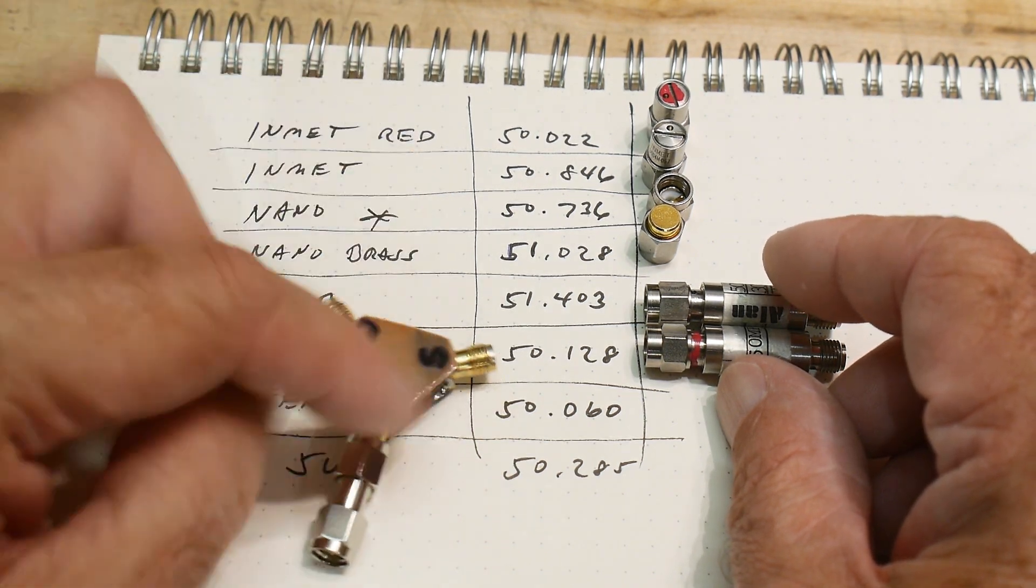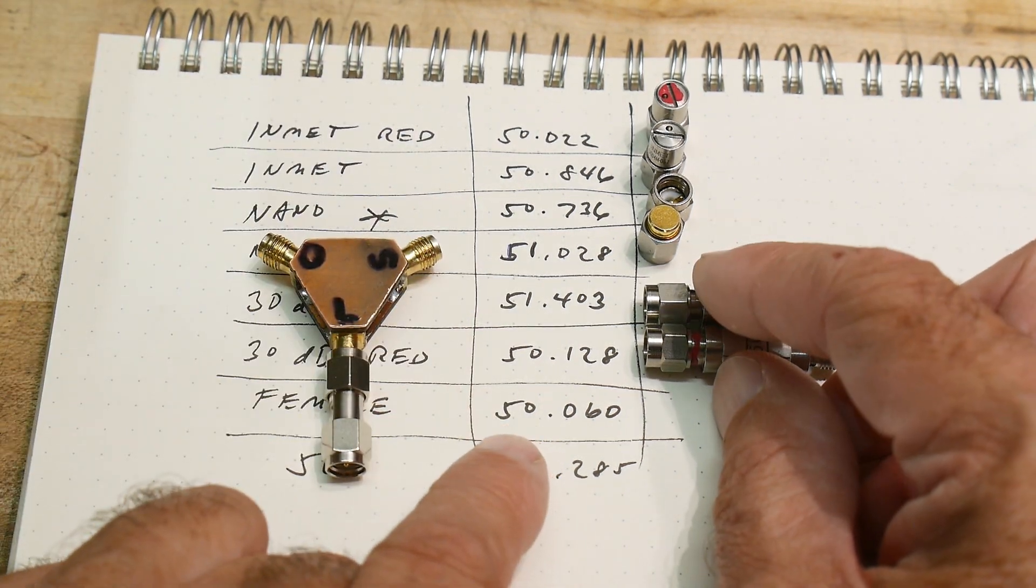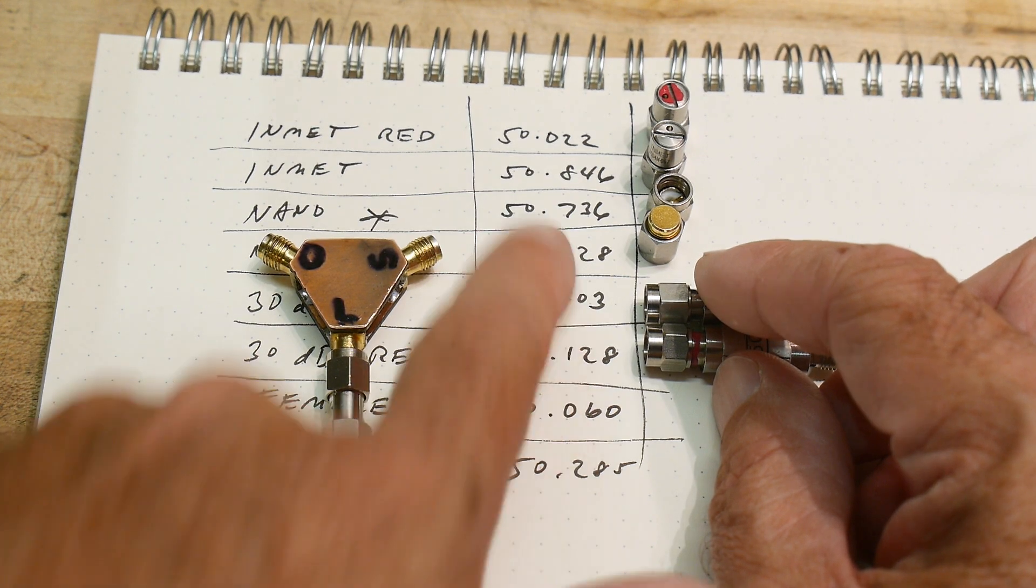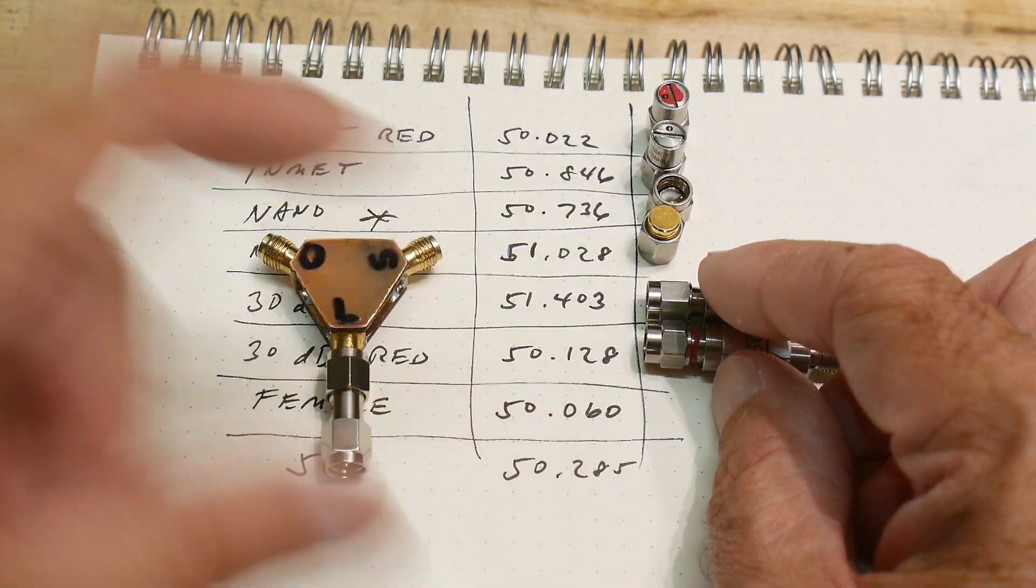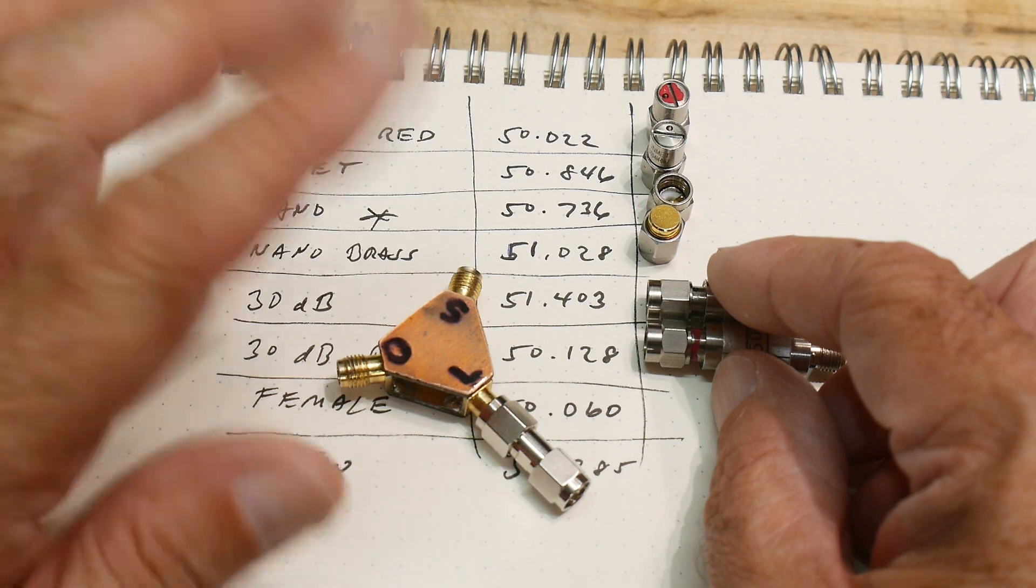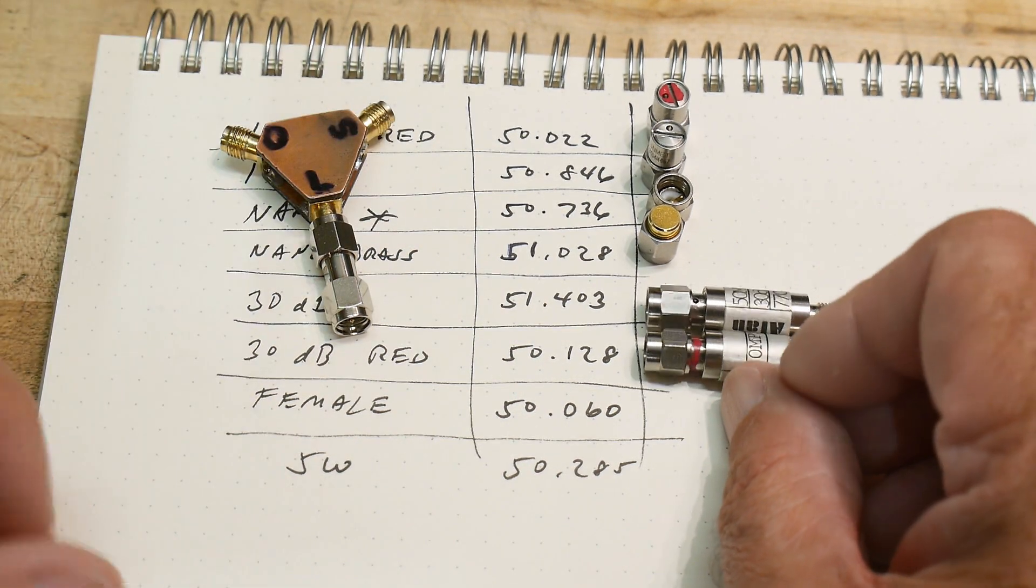Now the one that I built, I made out of 200 ohm resistors. So mine measures 50.06, right? So it's right up there in league with the very best one I have. So the cal standard that I built is very, very good for this.